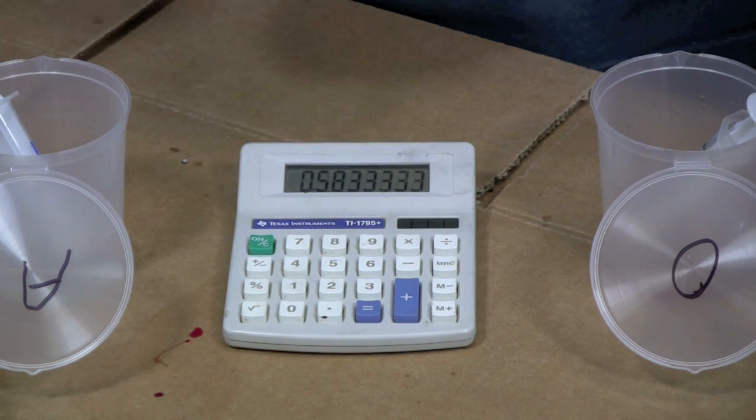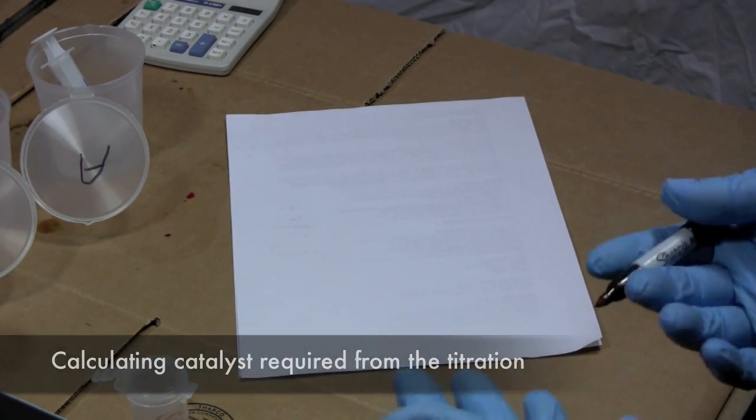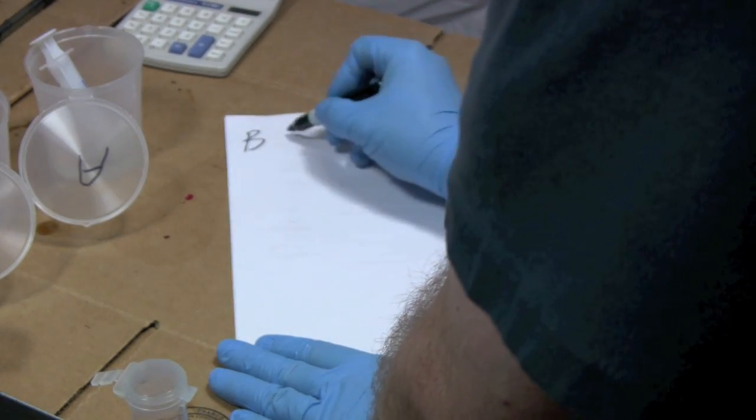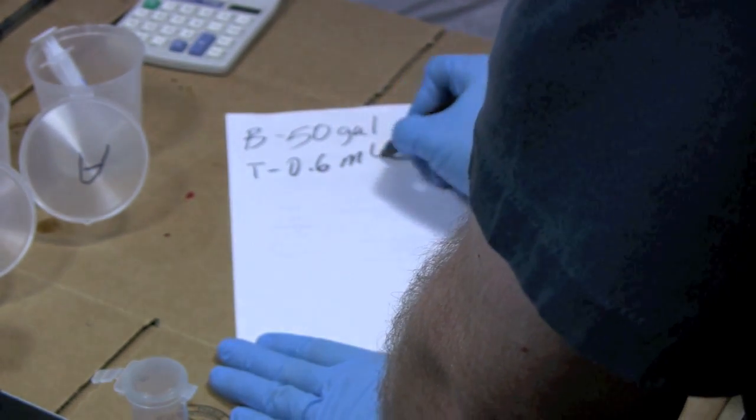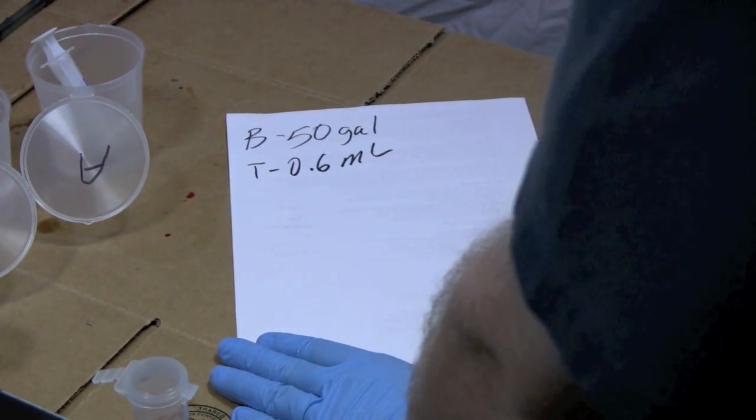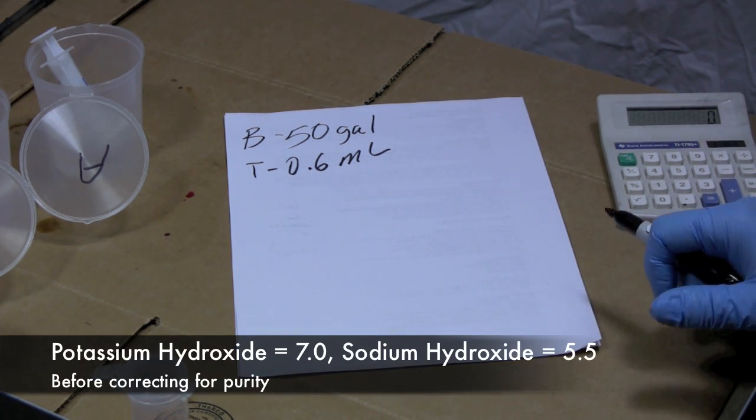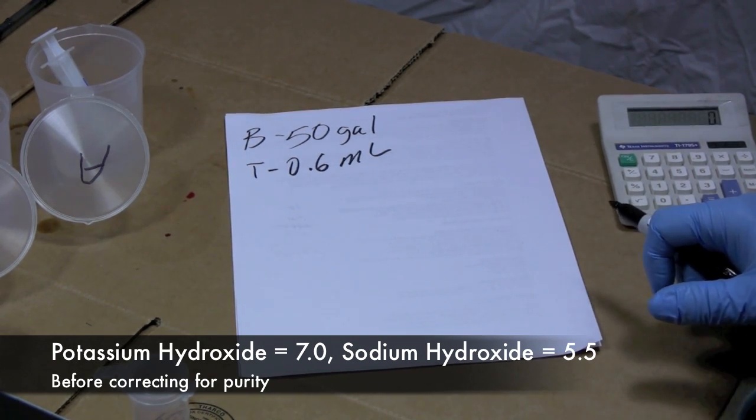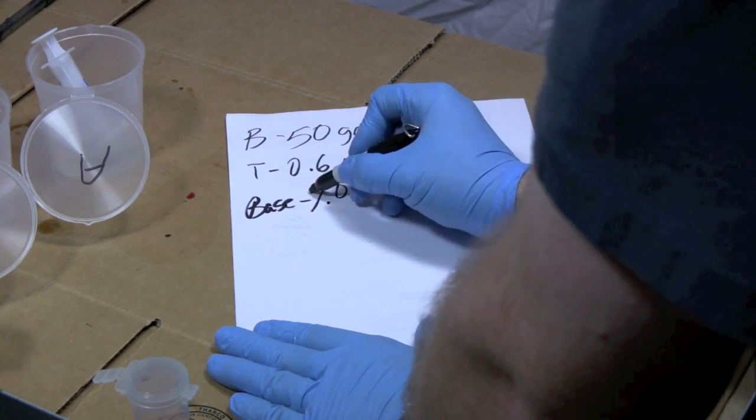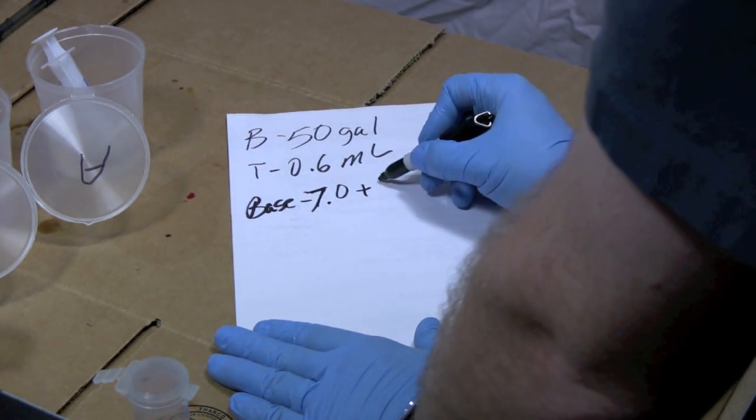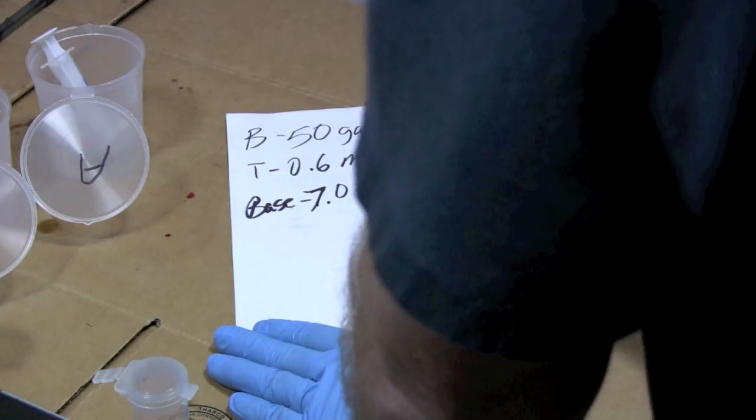Next we're going to talk about how we translate that into making biodiesel. Now it's time to figure out how much catalyst we're going to use when we make biodiesel. We're going to suggest that we're going to make a 50 gallon batch. We know that this oil titrated at 0.6 milliliters. We know that if we're using brand new oil, it will take 7.0 grams of potassium hydroxide per liter of oil to make it. So I'm going to call this my base. To that base I add 0.6 because that's how much additional catalyst per liter of oil it takes to make biodiesel. I get 7.6.